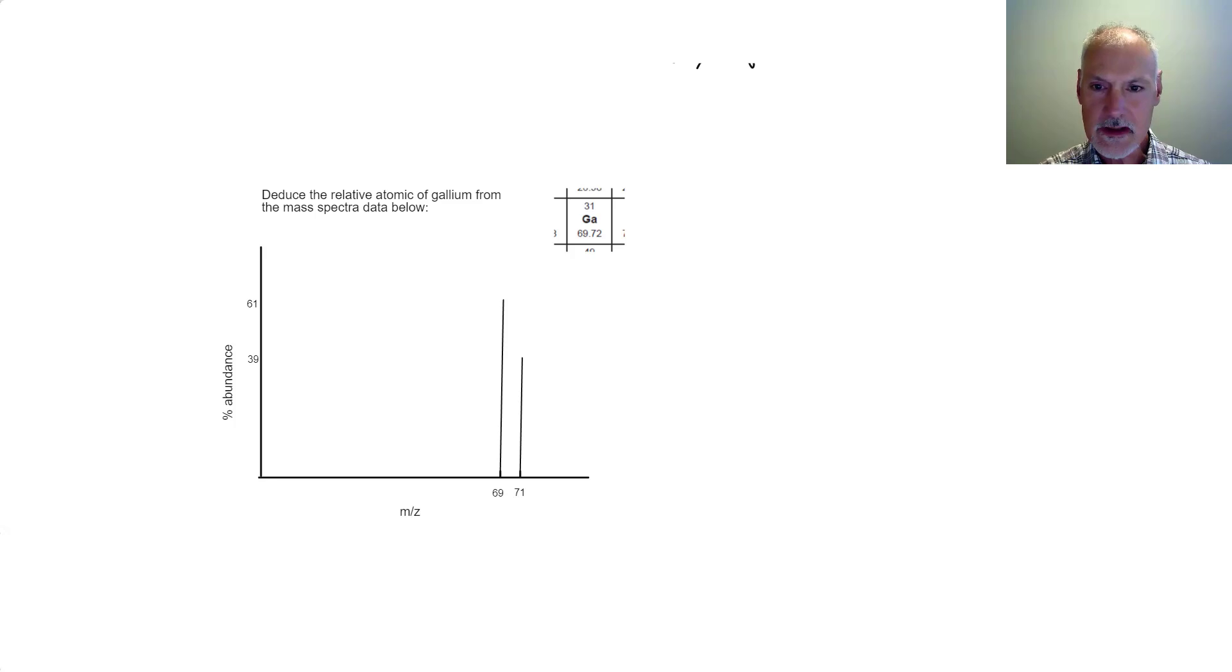So let's take a look at how we're going to take some information from a mass spectra and determine the relative atomic mass. Now, we're here given the information for gallium. Now, it's also present in your IB data booklet. Right there is our answer, the essentially the relative atomic mass. But we're asked to use the data that we're given below.